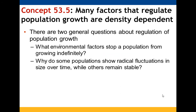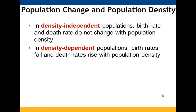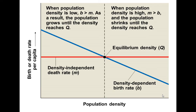Factors that regulate population growth tend to be density-dependent. What stops a population from growing indefinitely, and why do some populations fluctuate while others stay stable? In a density-independent situation, density does not affect birth or death rate. In a density-dependent population, population density has a large impact on birth and death rates. In the graph, density-independent death rate is shown as a horizontal line — it does not change with population density.